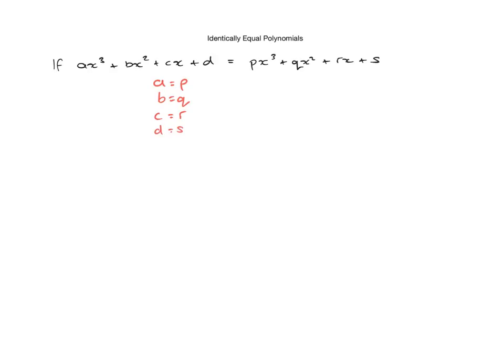And that's essentially what this is telling us. This means that if a is equal to p, b is equal to q, c is equal to r and d is equal to s, then the left hand side expression here is equal to the right hand side expression here.